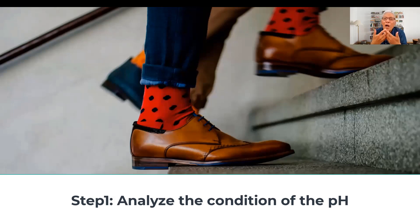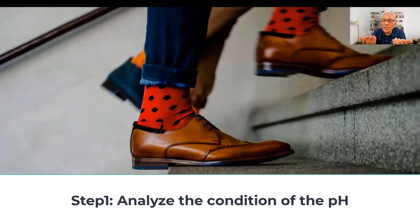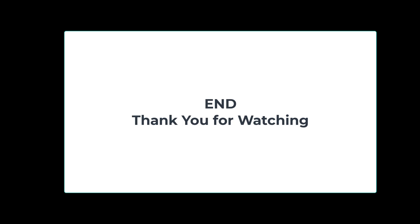You now know how to identify the pH as either normal, acidosis, or alkalosis. This concludes the first step in interpreting an arterial blood gas — examining the pH.